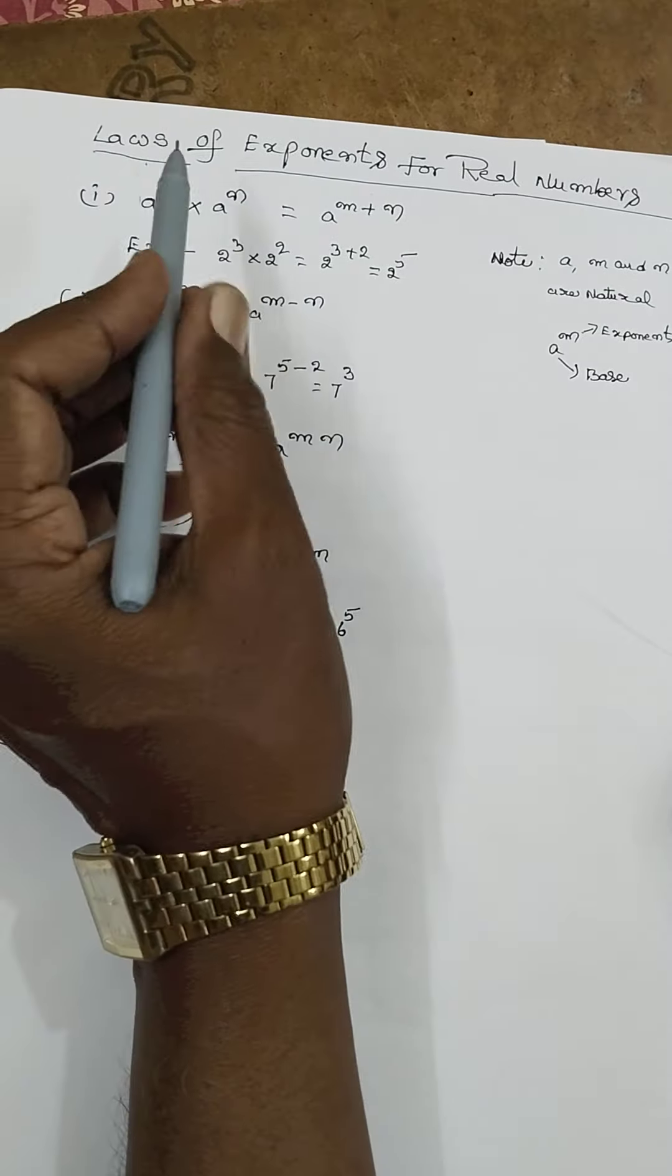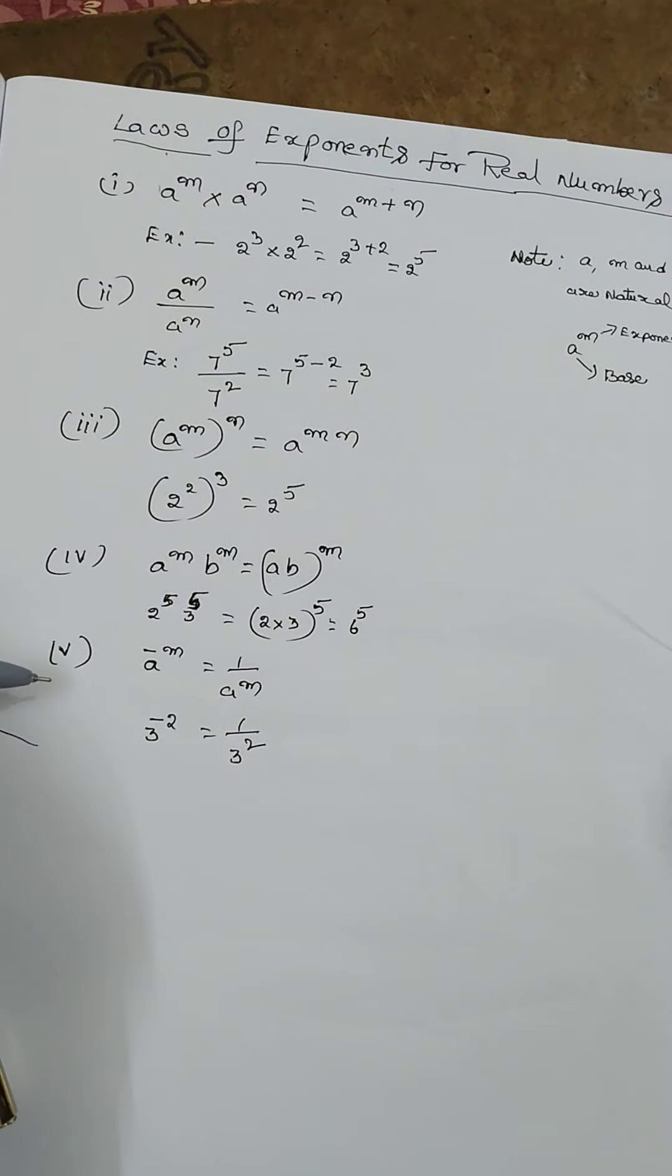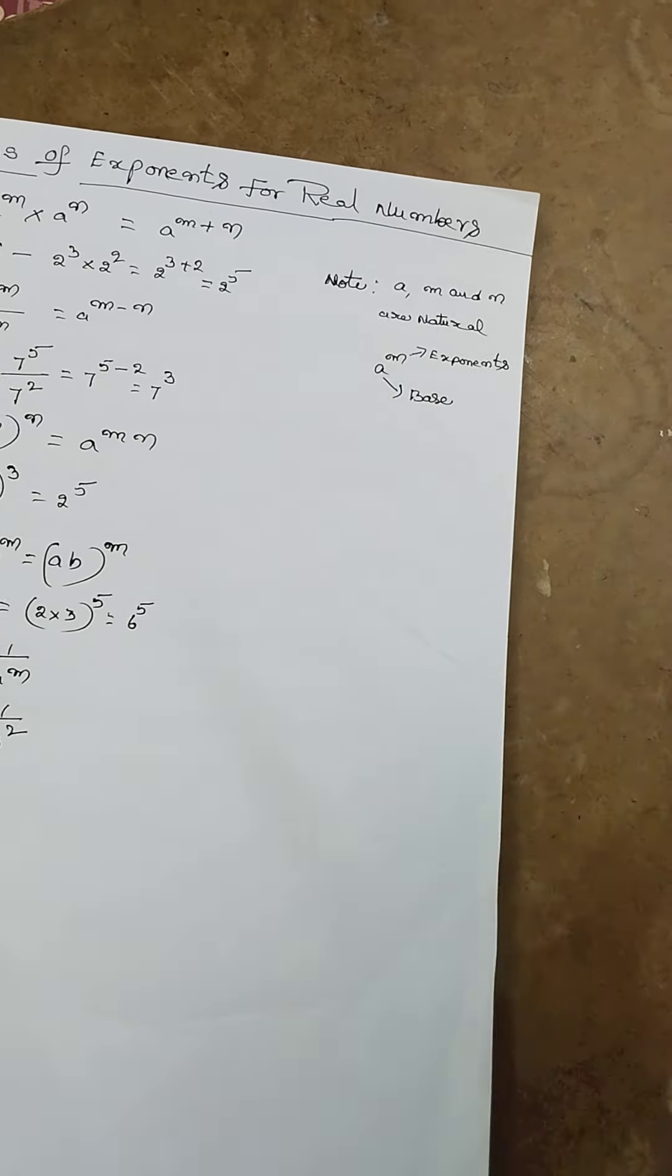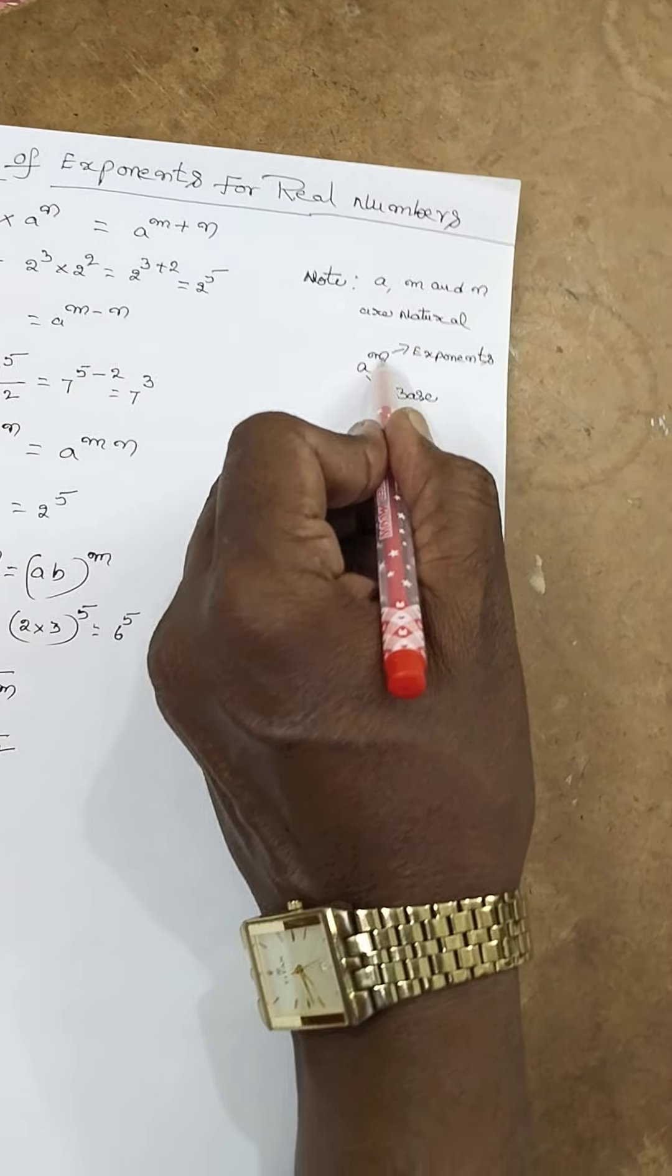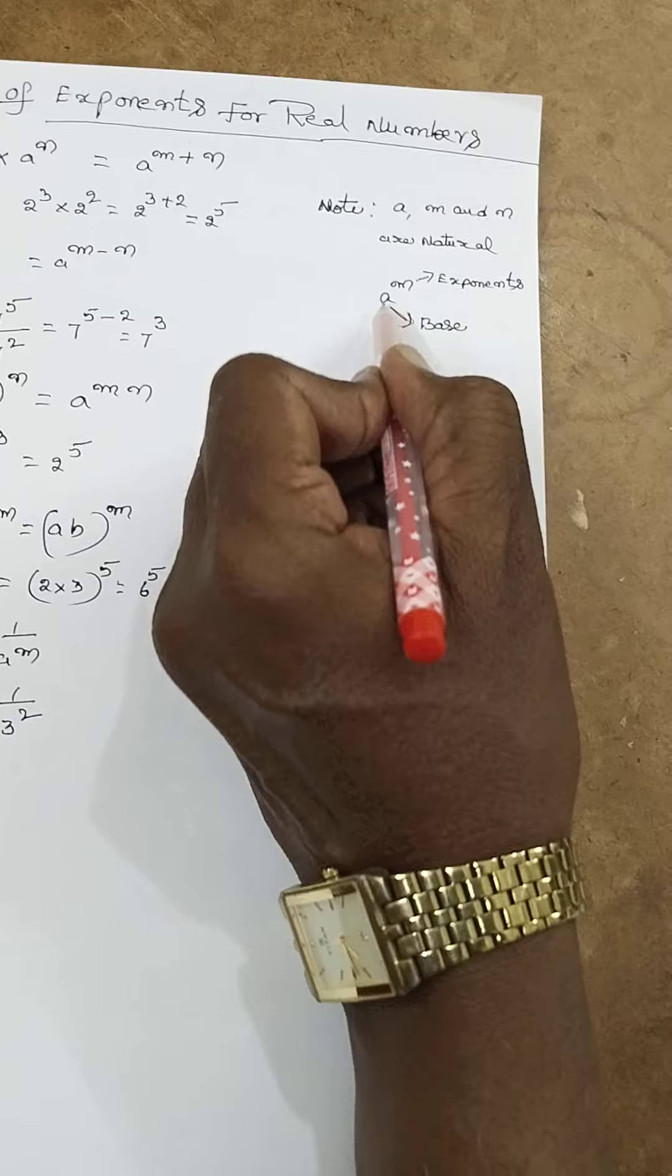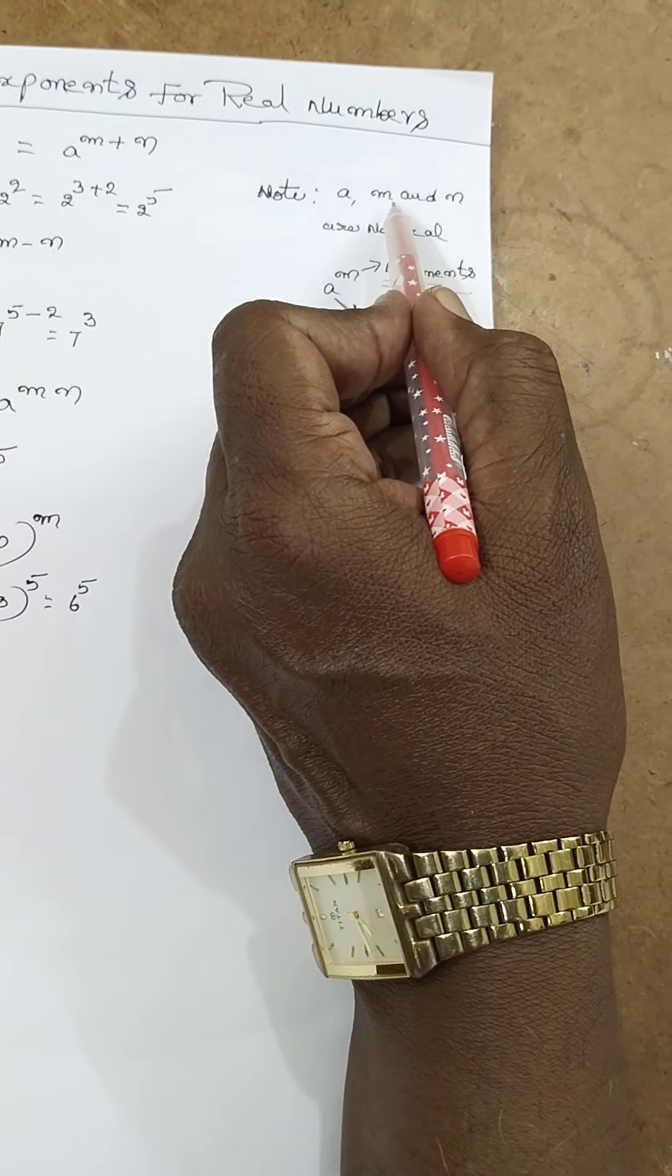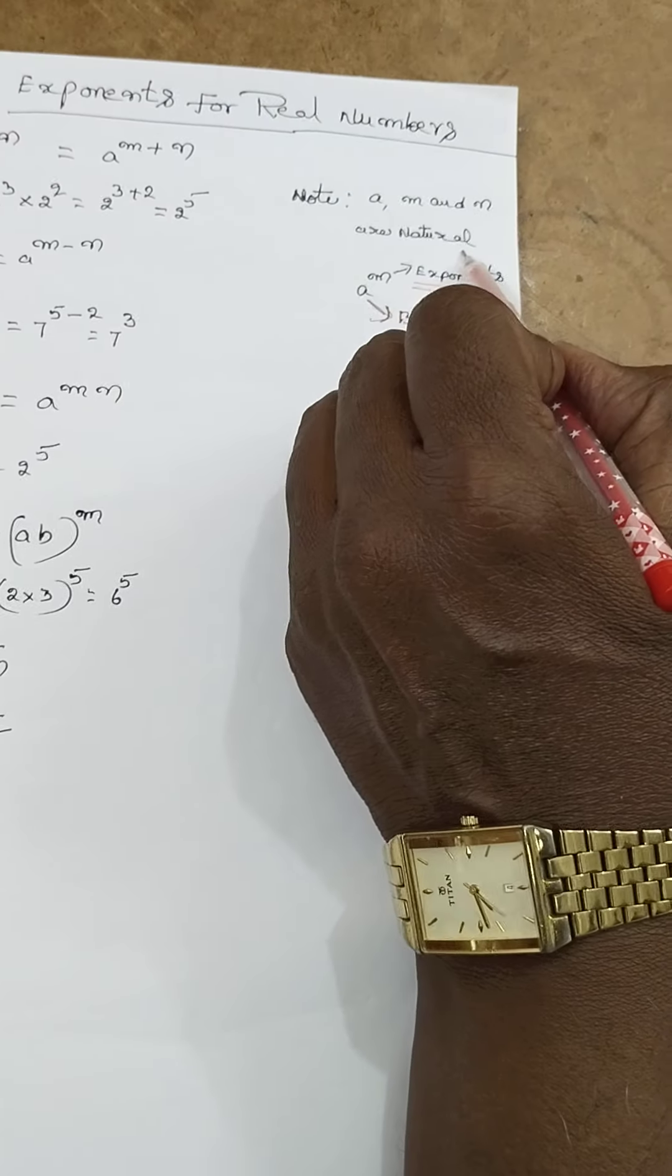Before we go to these 5 formulas, you must observe this one first. Here a^m means a is the base and m is the exponent. Here a, m, and n are natural numbers.